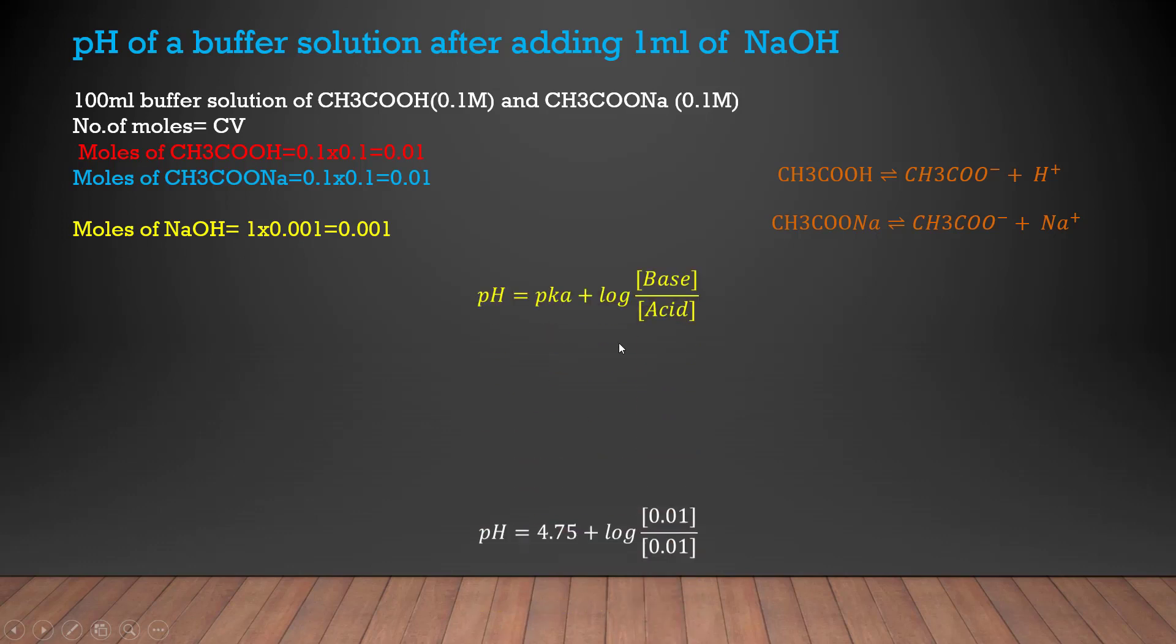Let's put in all this data into Henderson-Hasselbalch equation and after adding sodium hydroxide what happens - the base actually increases the base in the numerator and it cancels out the acid in the denominator. That is what we have shown right over here.